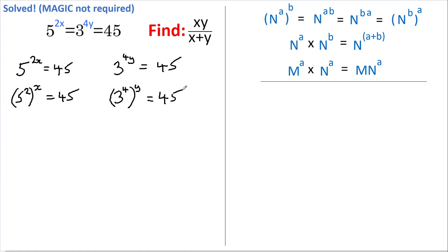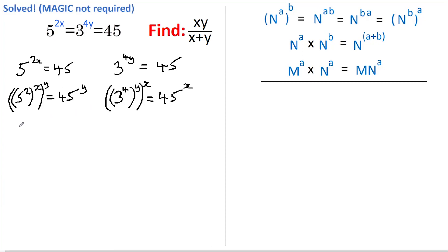Now on this first equation, I'm going to raise all of this to the power of y, and raise 45 to the power of y. And on the second equation, I'm going to raise all of this to the power of x, and raise 45 to the power of x. Again using the first rule, I can rewrite these expressions.